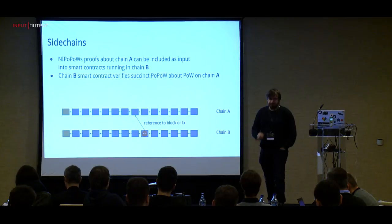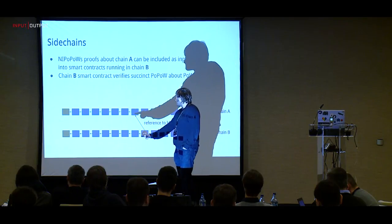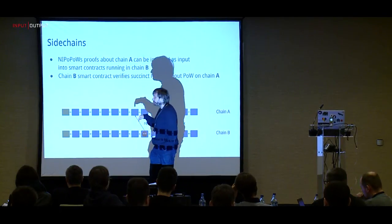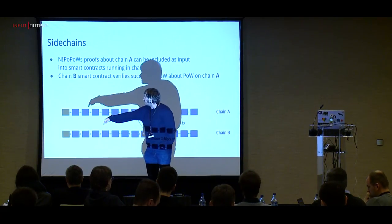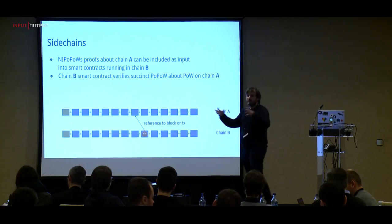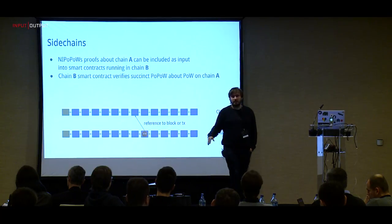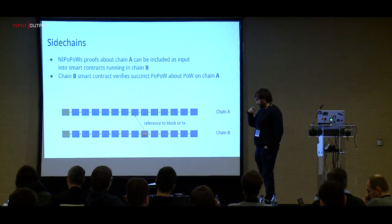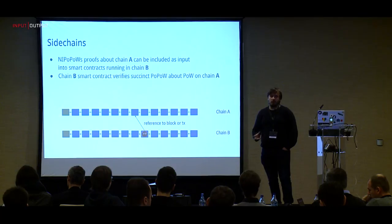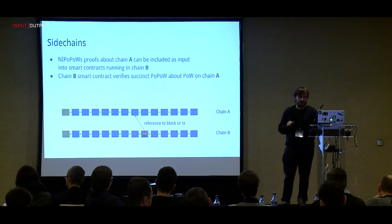For sidechains, since we have proofs of proofs of work, we can use them to prove something happened on a remote blockchain. We keep a representative set of super blocks, include the infix portion for the specific event, compress it into a short string, and put it into the other blockchain. The smart contract on the destination chain checks syntactic correctness and the proof of proof of work — verifying enough super blocks are present — achieving the required isolation.